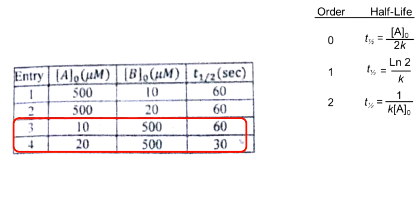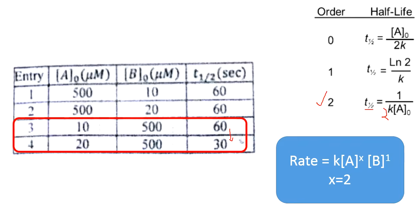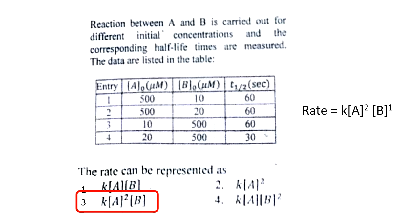To find X, we keep the concentration of B constant and vary A. When the initial concentration of A is doubled, T-half decreases to half its original value — this corresponds to second-order kinetics. Therefore, X equals 2 in the rate equation, giving the final rate law as rate equals K times A squared times B raised to 1, which is option 3.